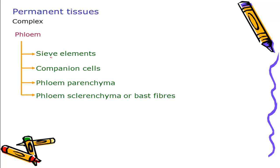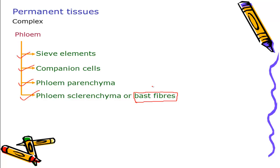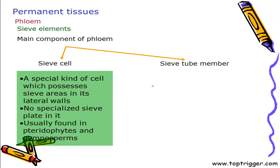Phloem can have these components: sieve elements, companion cells, phloem parenchyma and phloem sclerenchyma — also known as bast fiber. Bast fiber is of great commercial importance and whatever ropes or fibers we see are primarily made up of bast fiber. Sieve cells are present in primitive plants like pteridophytes and gymnosperms, and conduction occurs through the lateral wall, as we have seen in tracheids.